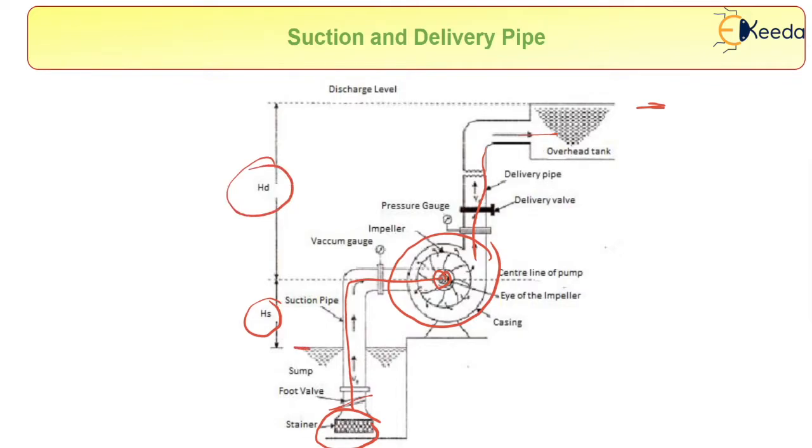As you can see, the suction head is the distance, or the vertical distance, between the level of water up to the center of the impeller. And from the center of the impeller to the water level, that is hd, the delivery head. This is regarding suction head and delivery head.